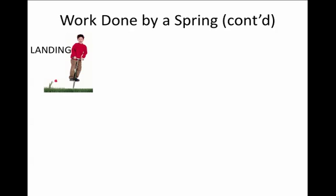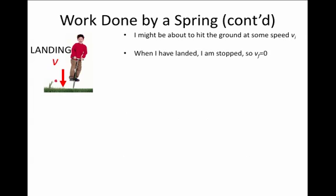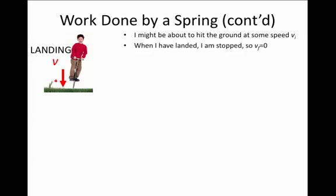Let's think about the process of landing on our pogo stick. When we're landing, we're initially at some speed, and we're heading toward the ground. We'll call this speed vi for v initial. When we've landed on the ground, we've stopped, and our speed is v final, which is zero.